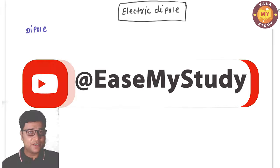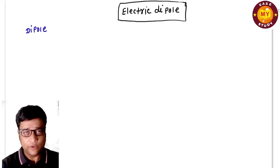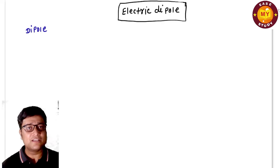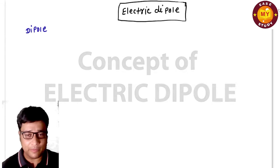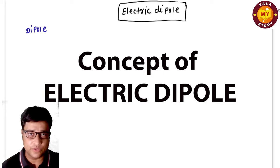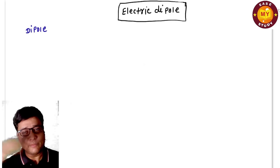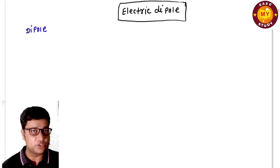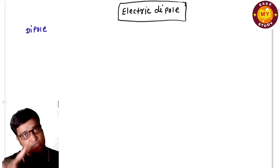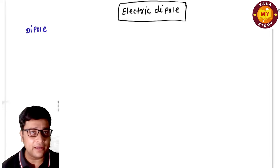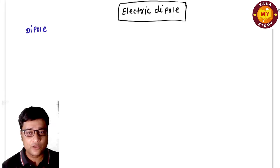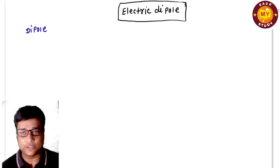Hello students, welcome to IS My Study YouTube channel. In this class I'm going to start the new topic: electric dipole. We'll understand the concept of electric dipole, how it comes and how it evolves. In later lectures you will get the electric potential due to an electric dipole, electric field due to an electric dipole, and what happens when an electric dipole is placed in a uniform electric field.